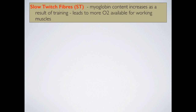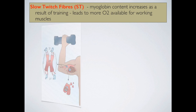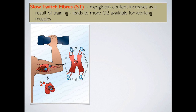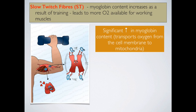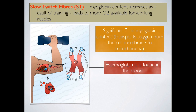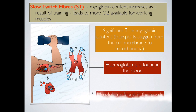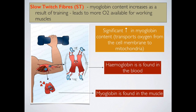Myoglobin content also increases as a result of training. Myoglobin is very similar to haemoglobin — it transports oxygen through the muscle. There is a significant increase in myoglobin in the muscle, which transports oxygen into the cell and to the mitochondria to help produce more ATP. It's important to note that haemoglobin is found in the blood, and myoglobin is found in the muscle.